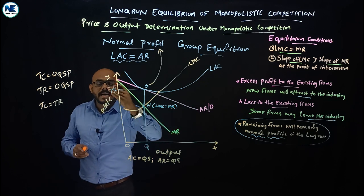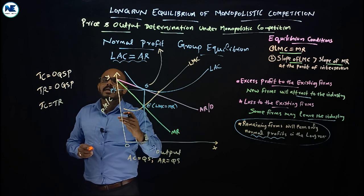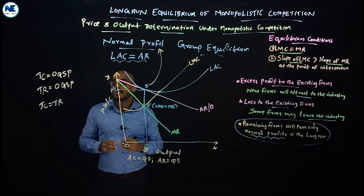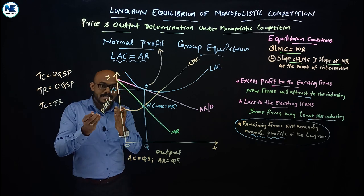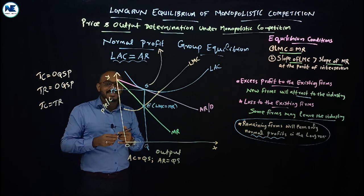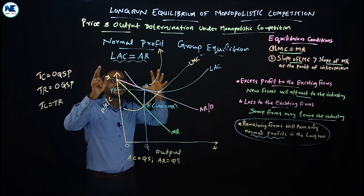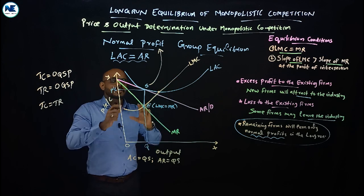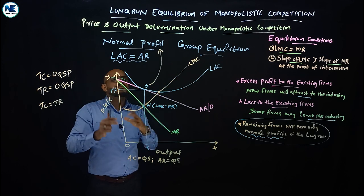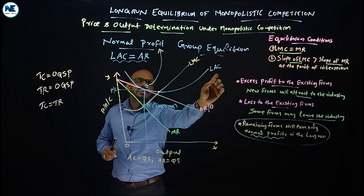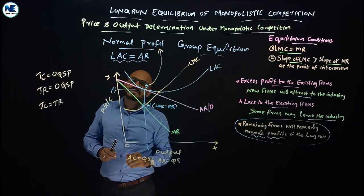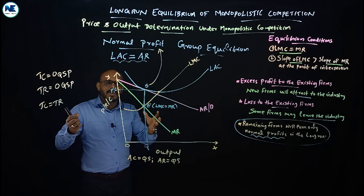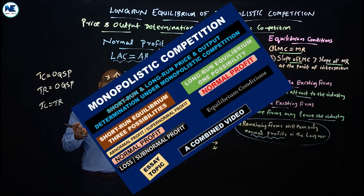But the price level in monopolistic competition's long run is higher than in perfect competition. This is the long run equilibrium of monopolistic competition, shown using long run average cost and long run marginal cost curves.